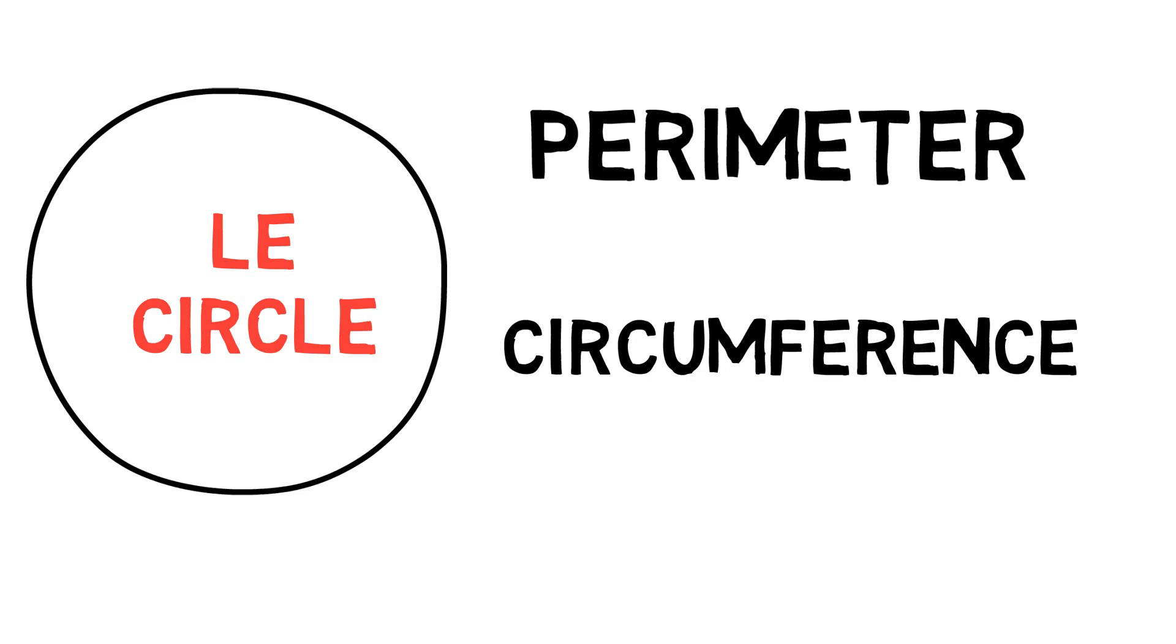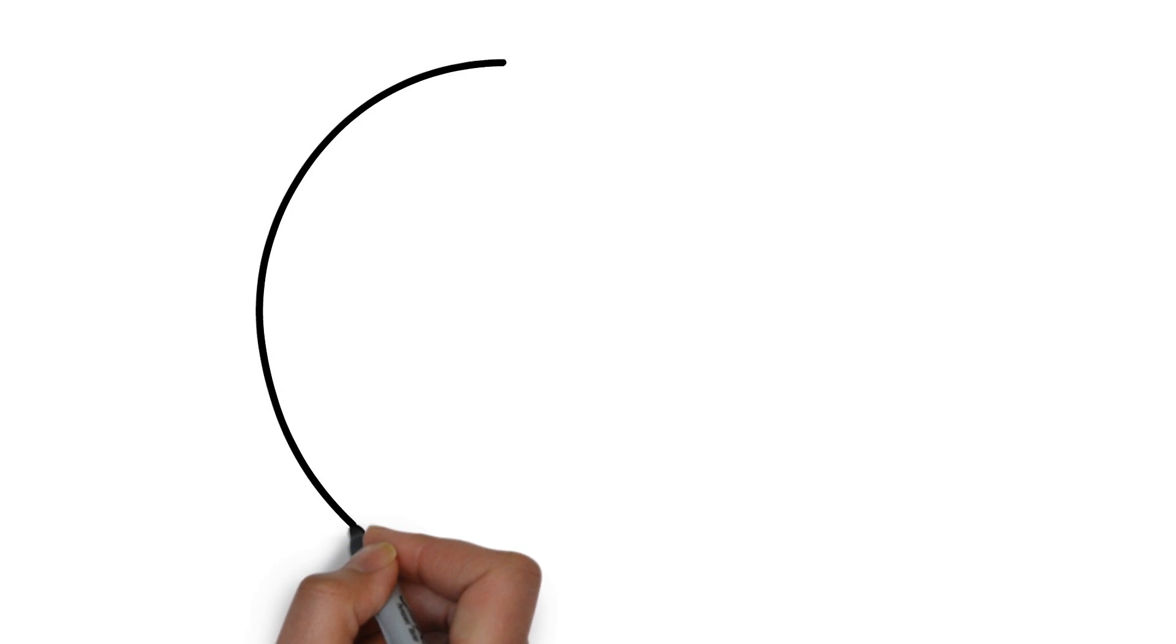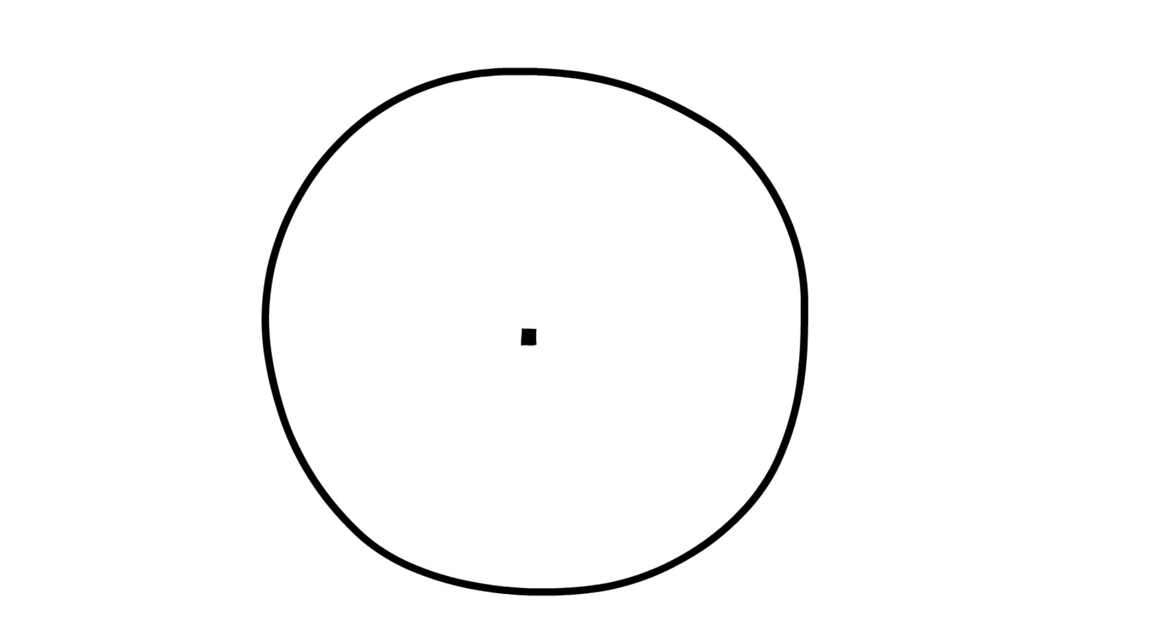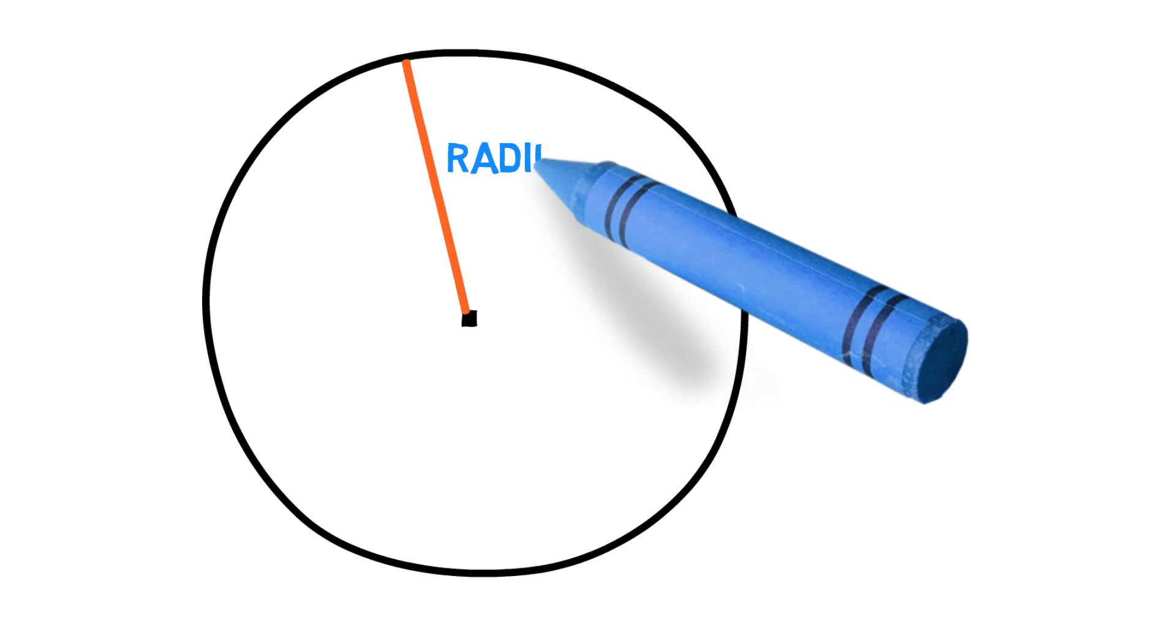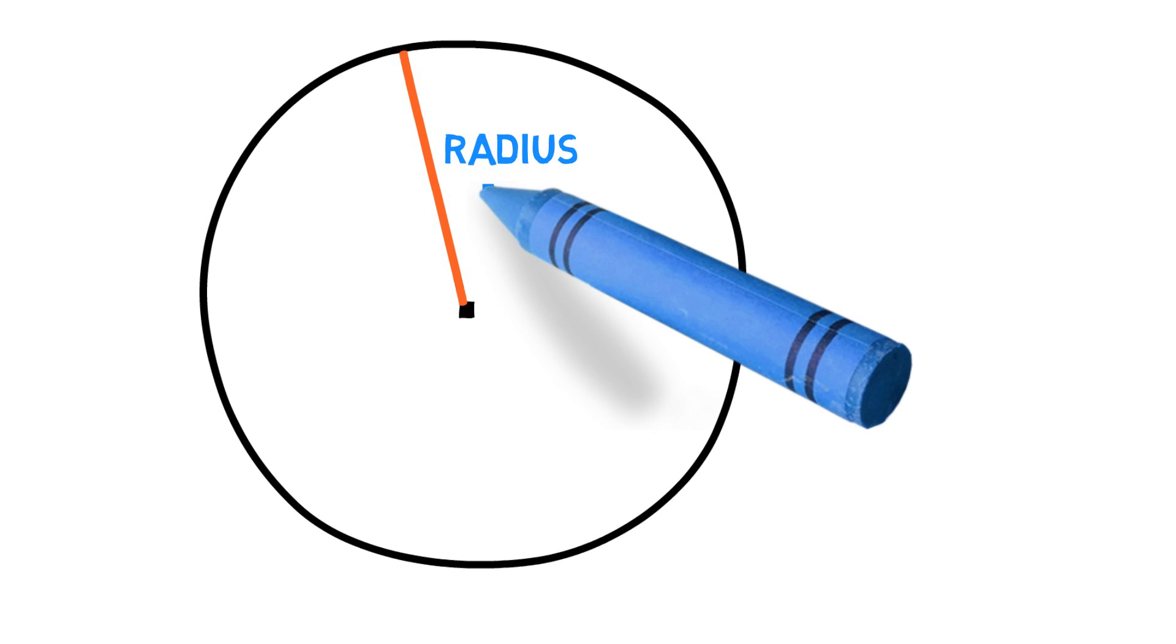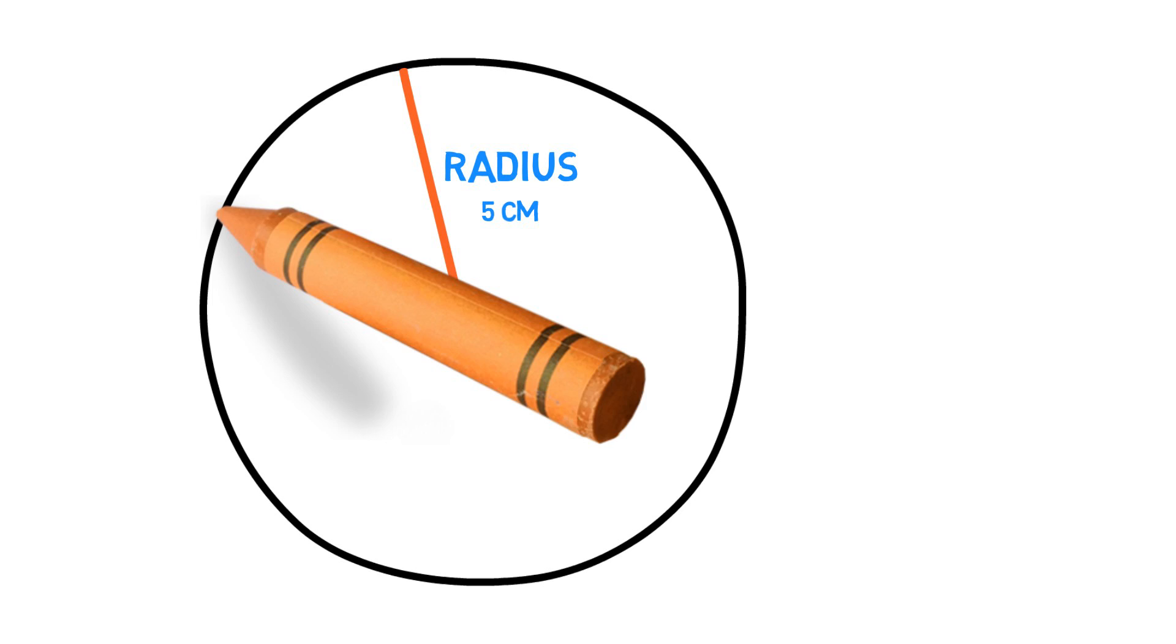But let's start with some concepts. So let me first draw a circle. This point here is the center of the circle. Now let's draw a line from the center to a point on the circle like this. This my friends is the radius of the circle. Let's assume we measured this radius and it was 5 centimeters. So we can say that the circle radius is 5 centimeters.